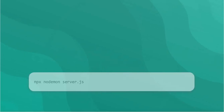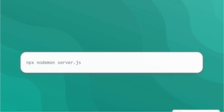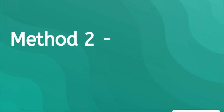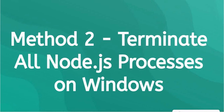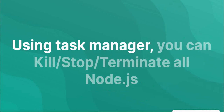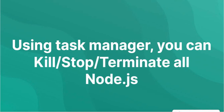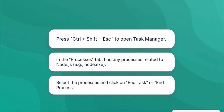You need to restart your Nodemon server using the appropriate command. To terminate all Node.js processes on Windows, use the Task Manager. You can kill, stop, or terminate all Node.js processes on Windows. In the Processes tab, find any processes related to Node.js, such as Node.exe, select them, and click 'End Task' or 'End Process'.